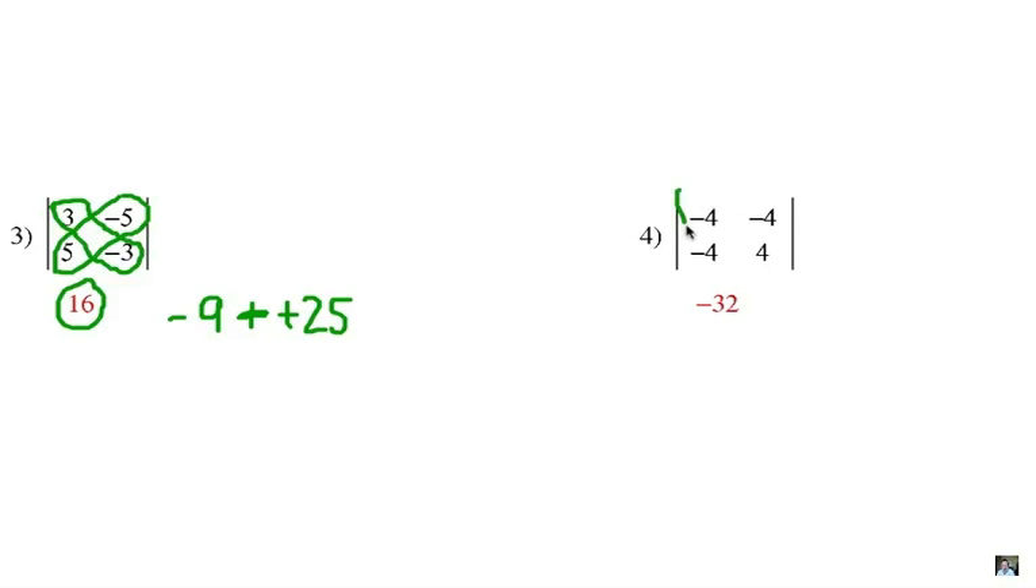Okay, number four. We have this product here which is negative 16, and we have this product here which is actually positive 16. And we are going to subtract them. Again, be careful with your signs. That's why the answer, the determinant of that two by two, is negative 32.